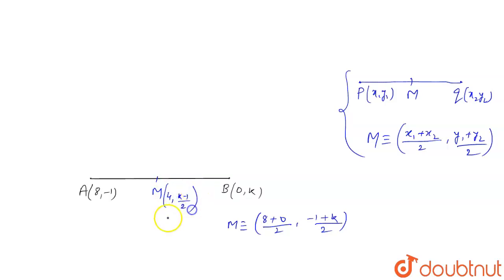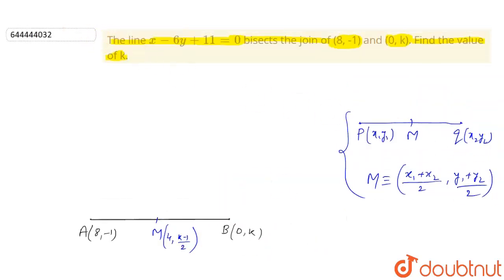Now we have given a line which is x - 6y + 11 = 0. The question is saying this line bisects the line segment AB. This is only possible when this line